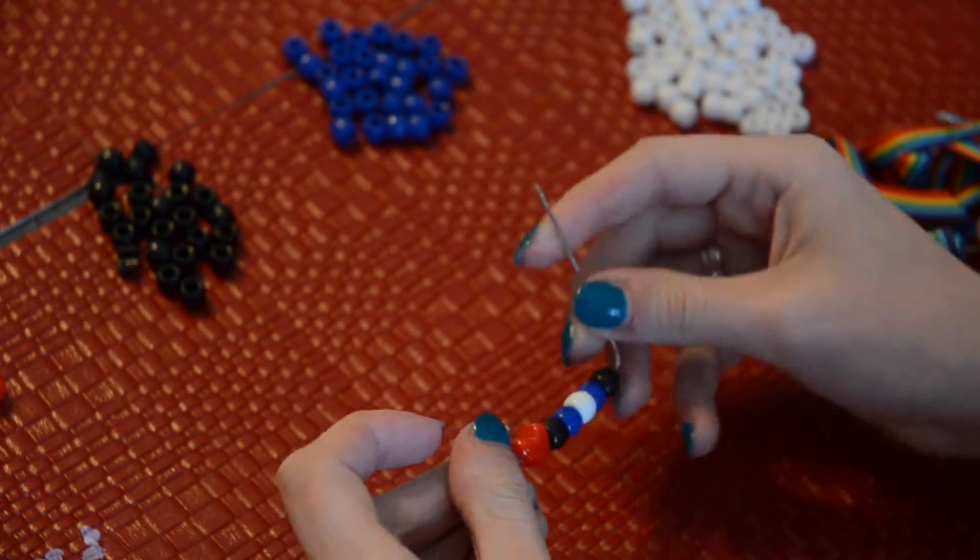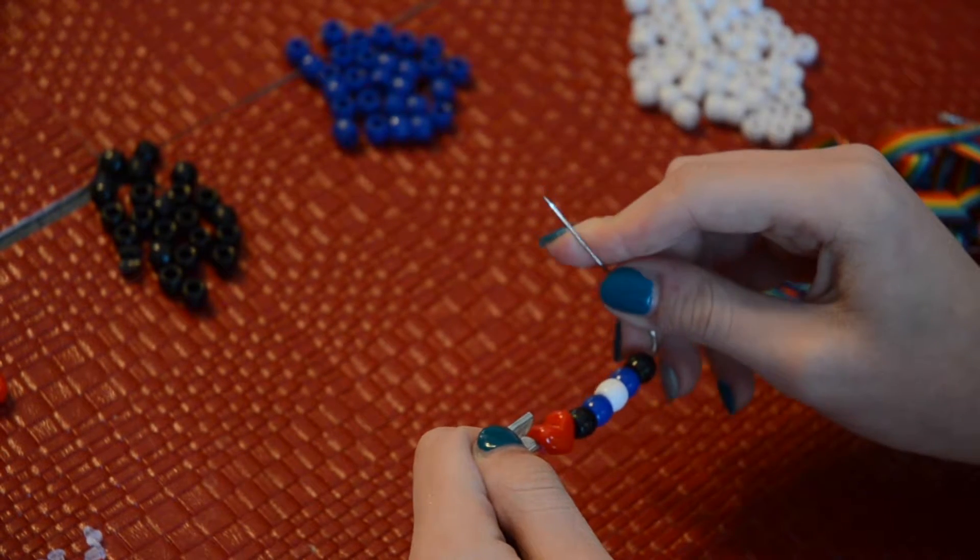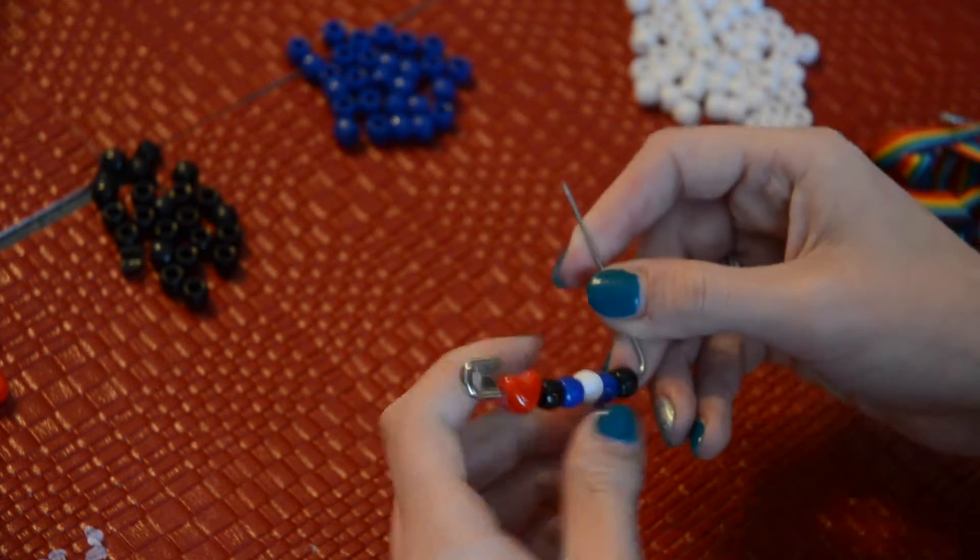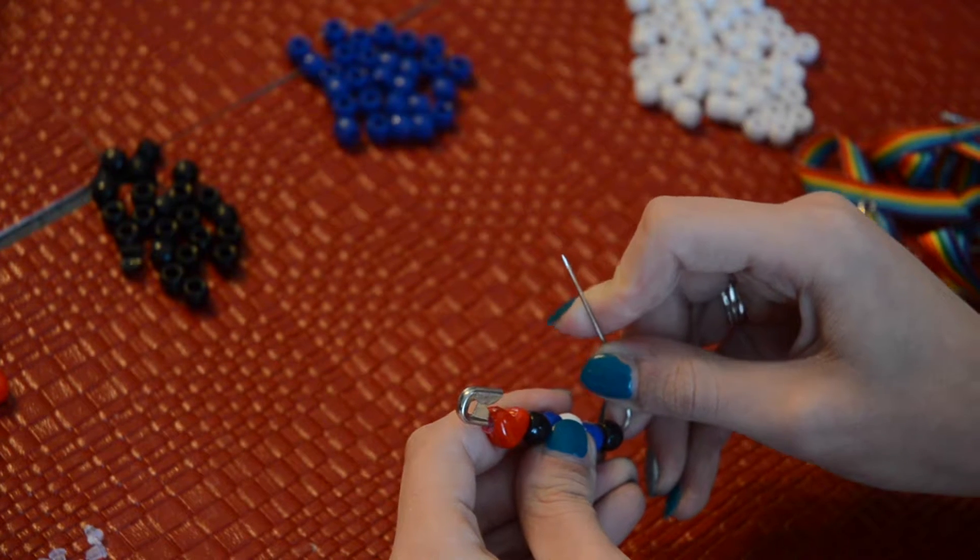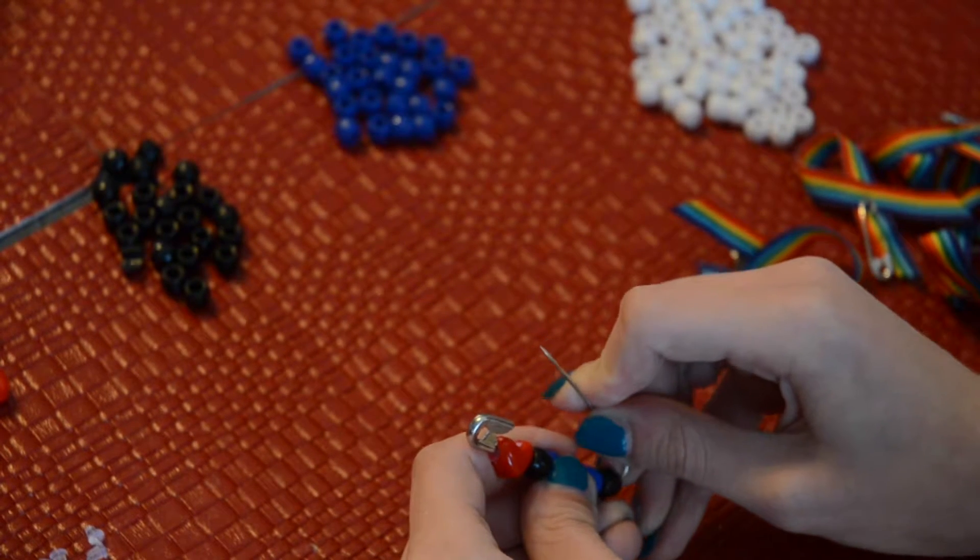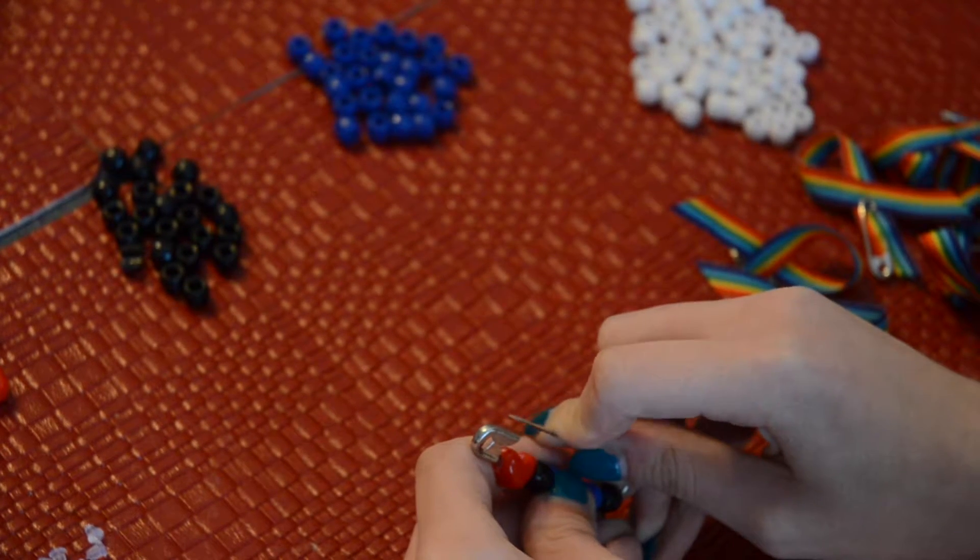Then you bend back your safety pen and you shape it, but you bend it back real slow that it's not going to snap, and you want to reshape it so that it's in the right shape.